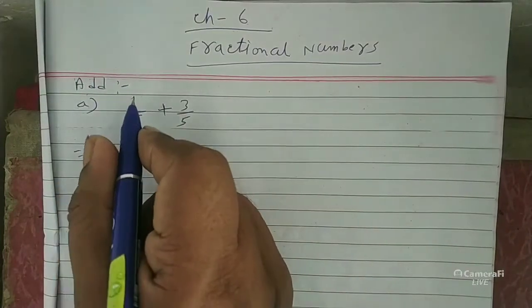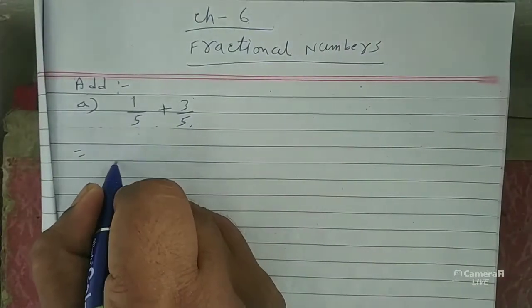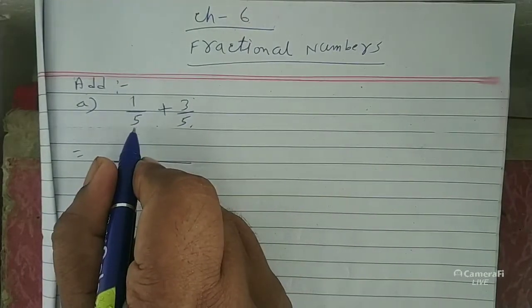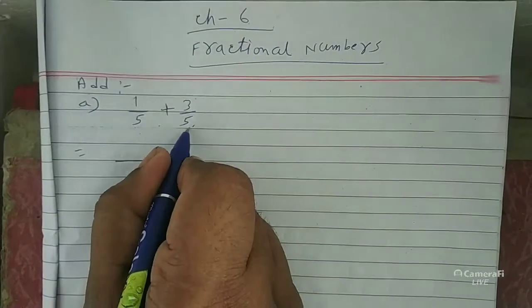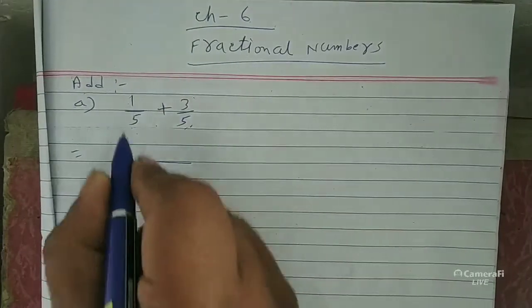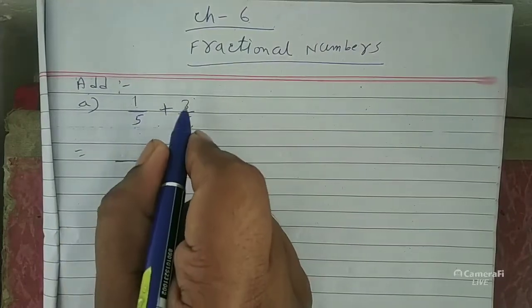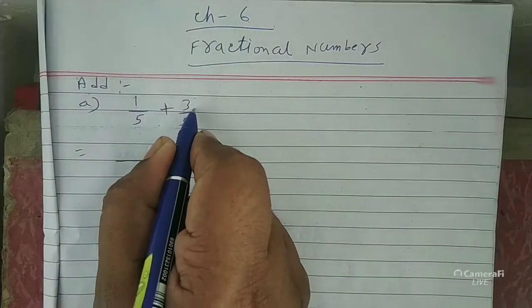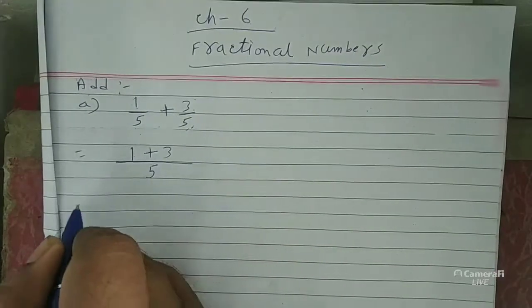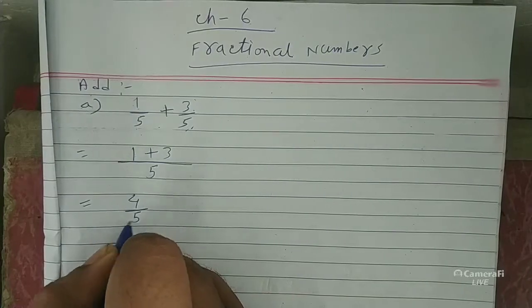First, write question A: 1 by 5 plus 3 by 5. The denominator is 5 and 5 — they are the same, so 5 is the common denominator. The numerators are different: 1 and 3. So you write 1 plus 3 is equal to 4 by 5.